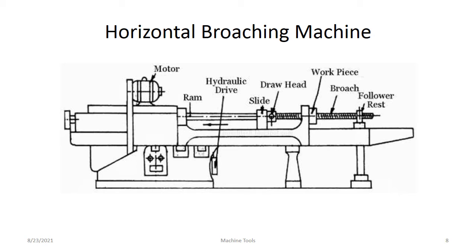In operation, the workpiece is clamped in the work holder first. The workpiece is clamped in the work holder while the broaching tool is held rigidly in the back. The pulling head is pulled against the workpiece, resulting in metal removal. Very long strokes up to 120 inches are available with this type of machine. The main drawback is that a larger floor space is required for this machine.